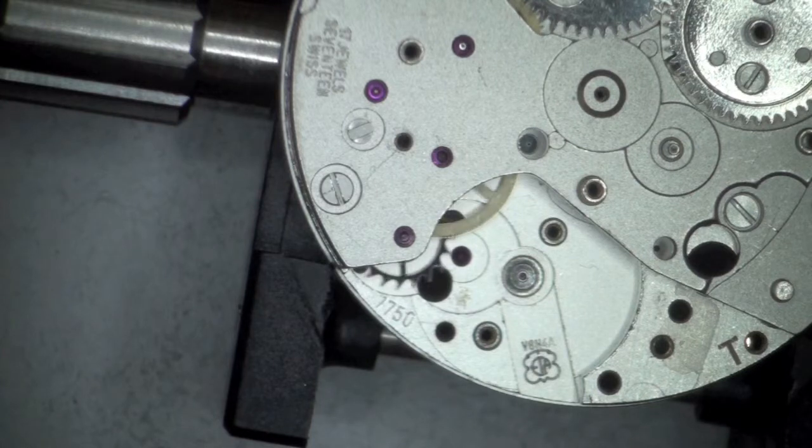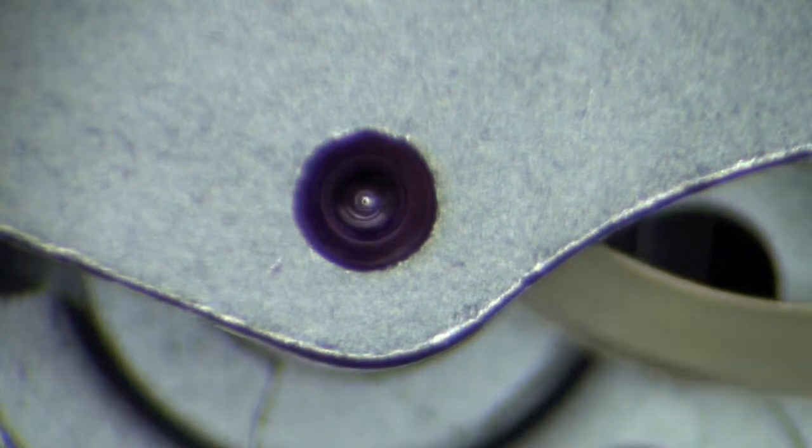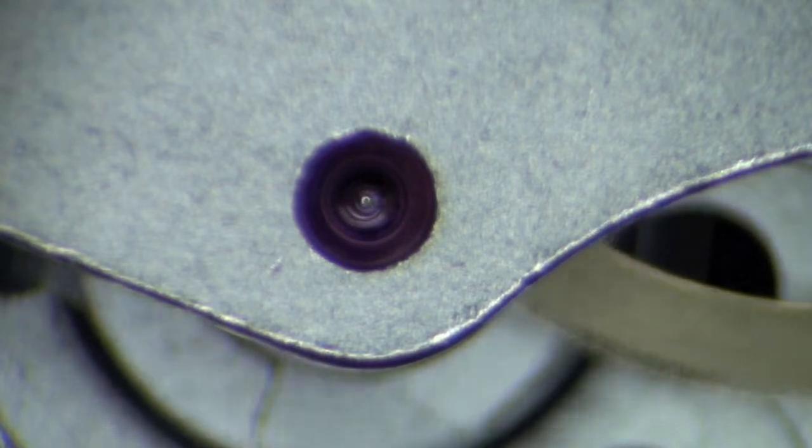In this example, it must be replaced. After repairing or replacing the damaged escape wheel, the function check is performed again by winding the watch by a few teeth of the ratchet wheel and verifying the smoothness at which the gear train lets down the power.